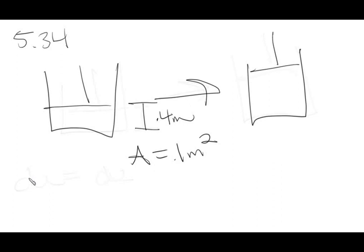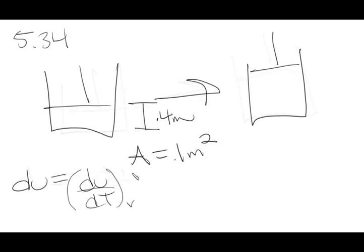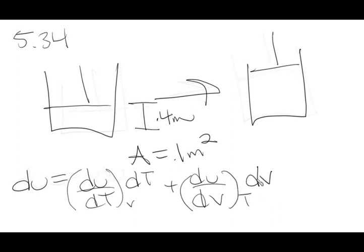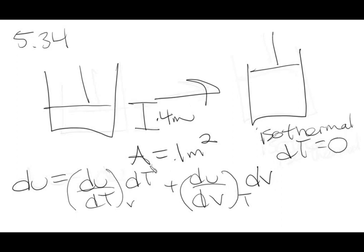The problem wants us to find the internal energy change dU. We can write dU = (∂U/∂T)_V dT + (∂U/∂V)_T dV. Since the process is isothermal, dT = 0, so the first term vanishes entirely. We only need to solve for the second term.